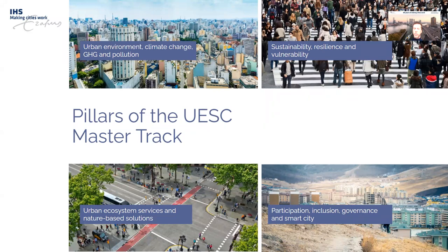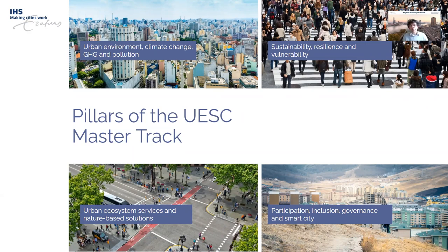The fourth pillar covers Participation, Inclusion, and Governance within a smart city context. This includes theoretical approaches to governing global environmental challenges, how smart cities are making environments more sustainable, and green gentrification — the difficult tension between making cities more sustainable and ensuring environmental justice. It also includes urban energy systems and energy transition as an important subject.